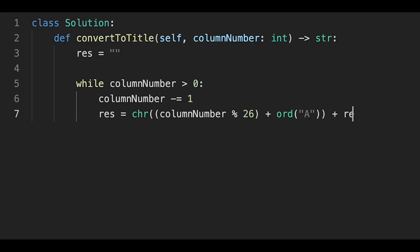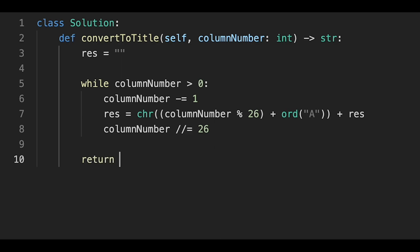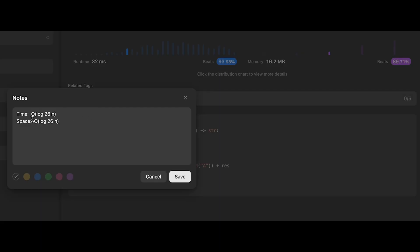After that, column number divide equals 26 to move to the next digit. After that, just return the result variable. Yeah, so let me submit it. Yeah, looks good.